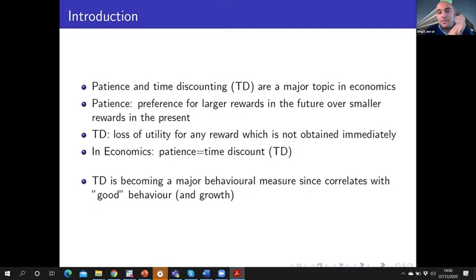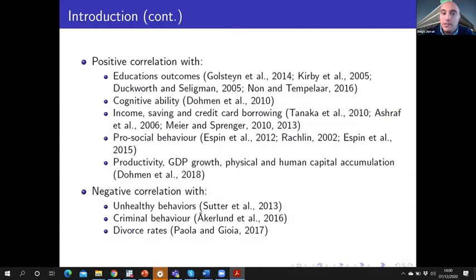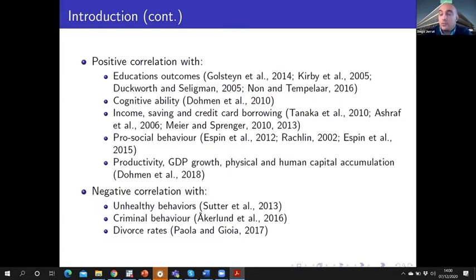There is evidence that time discounting is correlated with good behavior. For example, it is positively correlated with education outcomes, cognitive abilities, income, saving, pro-social behavior, productivity, GDP growth, and human capital accumulation. It is also negatively correlated with unhealthy behaviors, criminal behaviors, divorce rates, etc.